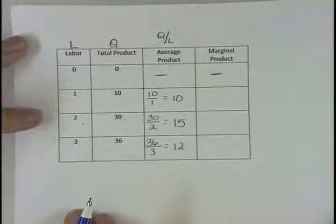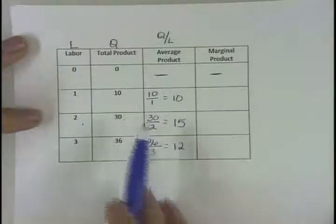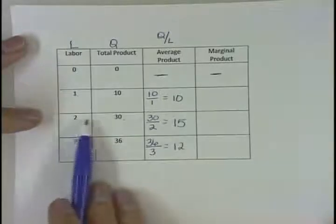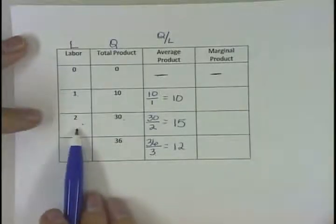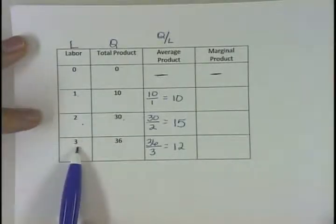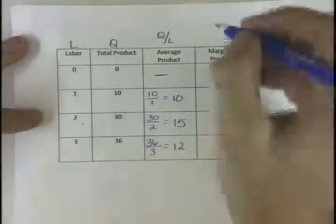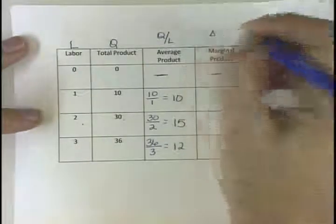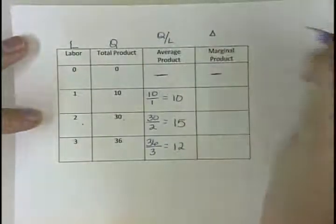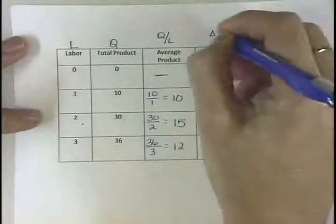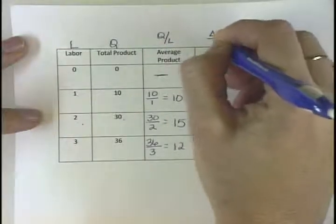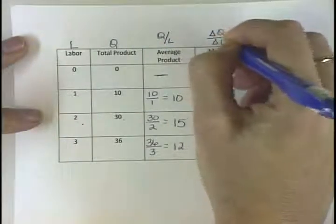Now marginal product is a little bit different. What we're trying to figure out is what does the first unit add to my production, then what does the second one add, and then the third. Our formula here is going to be the change — remember, delta means change — our change in quantity divided by our change in labor.